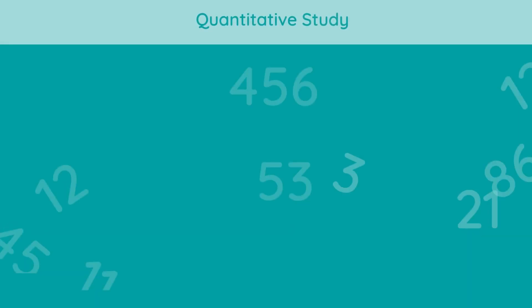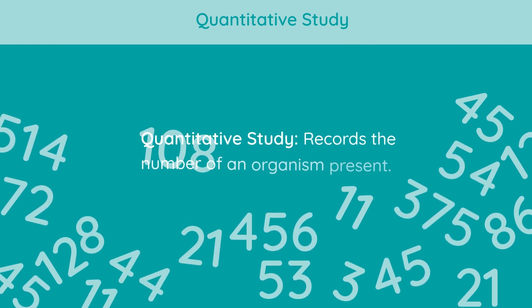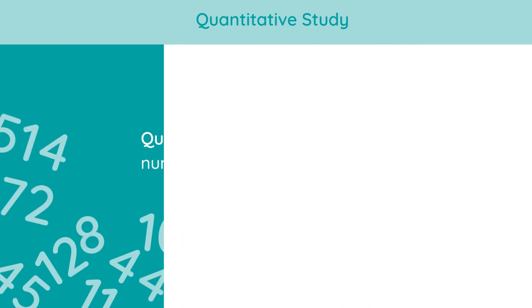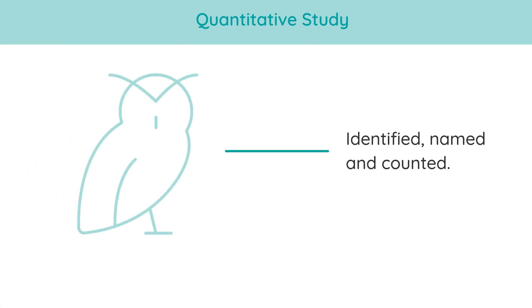A quantitative study, on the other hand, records the numbers of organisms that are present. So organisms are identified, named, and counted. It's all about figuring out how many organisms are there.